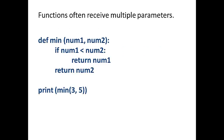Functions often receive multiple parameters. There's actually no limit on the number of parameters you can pass to a function. So in this function, min, we pass two parameters, num1 and num2. And it really just finds the min of those and returns the minimum.